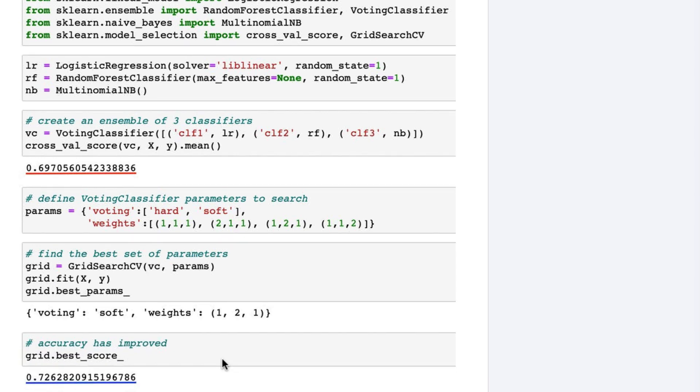Keep in mind that we have not yet tuned the parameters of the individual models, such as the C value of logistic regression or the alpha value of naive Bayes. It's highly likely that the accuracy of the ensemble could be improved even further by tuning each model within the ensemble.